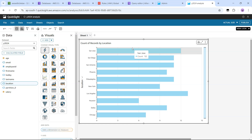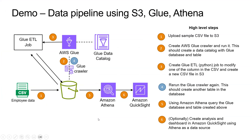Here you can see the number of users located at different locations. Likewise, you can create different charts and graphs as per your requirement — it is a really powerful BI tool in AWS. With that, we covered the entire demonstration: we got data into S3, processed it, created the data catalog, queried it using Athena, and now we are using QuickSight to visualize that data. This gives you a complete picture of how data is ingested, processed, and analyzed in AWS.